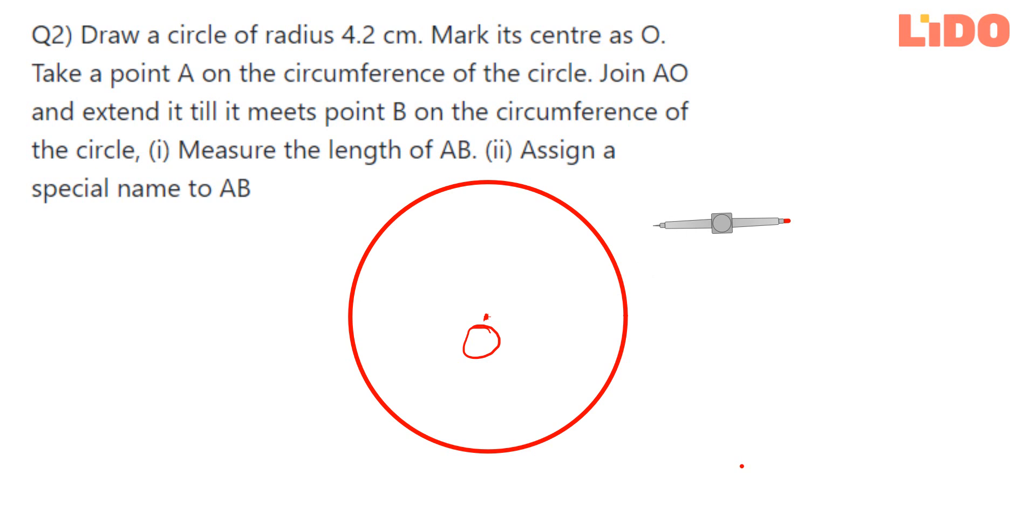Let me take one point here on the circumference of the circle. I will draw it. Yes, I'm going to take the point over here. Now what's next? Join A to O. I'm going to join this one.